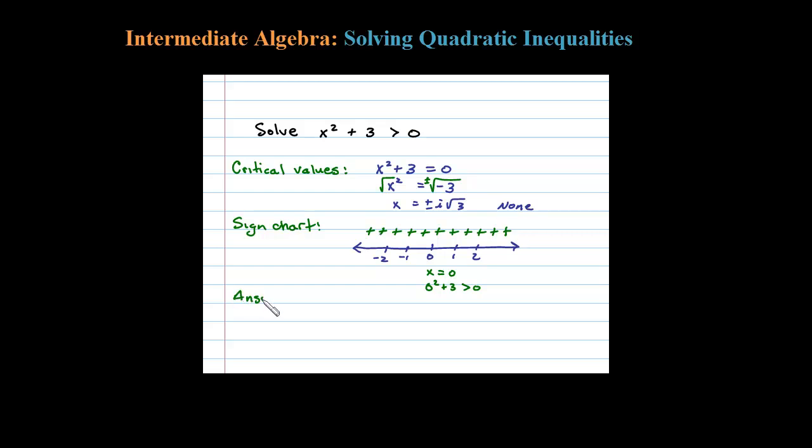the question. We're going to use the sign chart to answer the question. The question is: when is this quadratic greater than 0? In other words, when is it positive? Looking at my sign chart, it's positive always. No matter what x value I choose, I'll plug that in and get positive results.